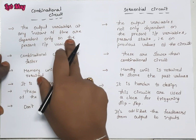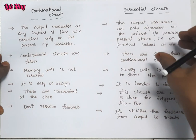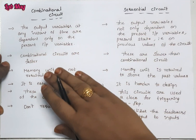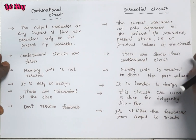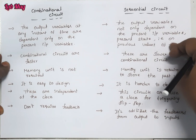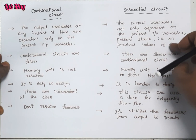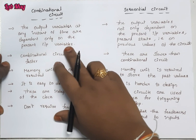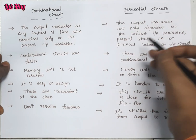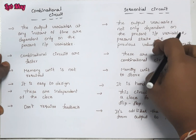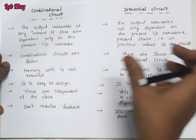First of all, in a combinational circuit, the output variables at any instant of time are dependent only on the present input variables. In sequential circuits, there is a memory element, but in combinational circuits there is no memory element. Because of that memory element, we can store previous values, access past values along with present values, and do processing — that is the sequential circuit.